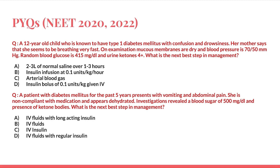Option A — IV fluids with long-acting insulin — is incorrect; we do not use long-acting insulin in an emergency. Option B — IV fluids only — will not control glucose. Option C — IV insulin only — cannot be given because the patient is grossly dehydrated. The best answer is option D: IV fluids with regular insulin, started together. The only reason to delay insulin is if potassium levels are low.